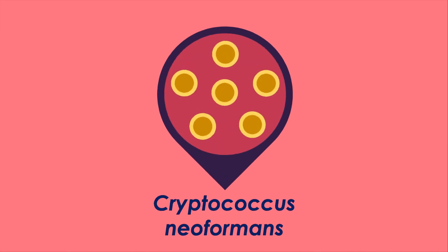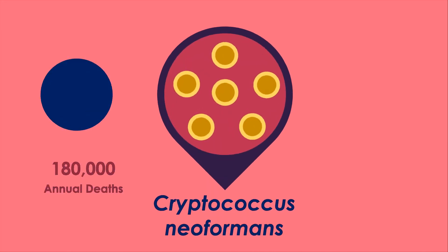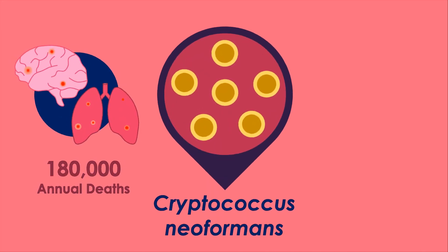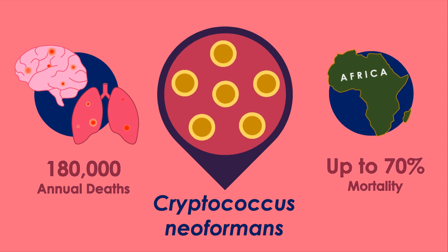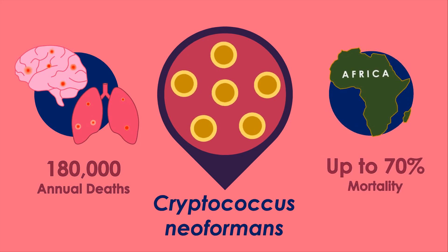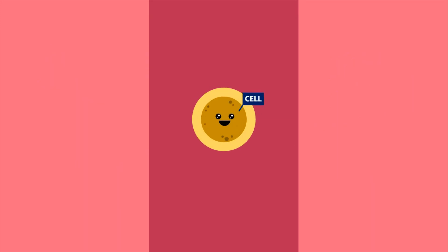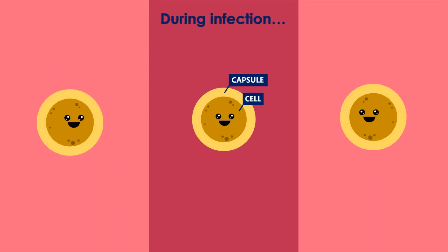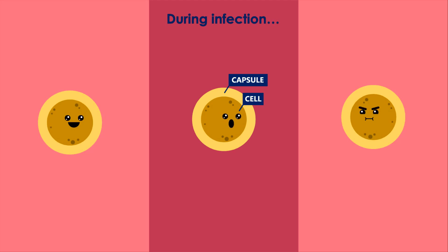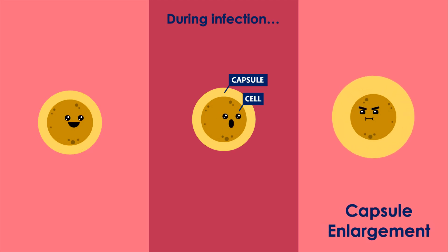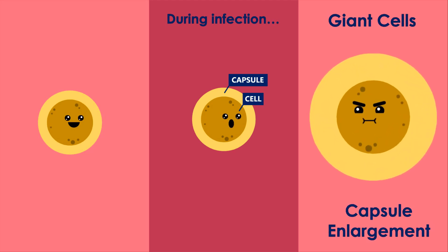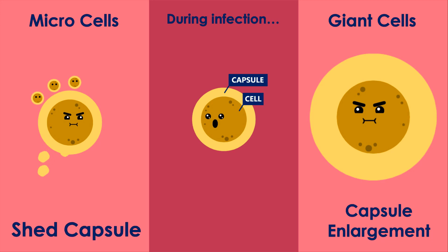Cryptococcus neoformans is a fungal pathogen which causes severe respiratory and cerebral infections in immunocompromised people. Cryptococcus cells are encapsulated yeasts, and during human infection a single strain can give rise to highly variable cell types, ranging from much bigger to much smaller.